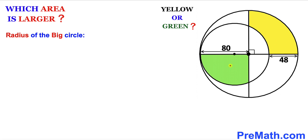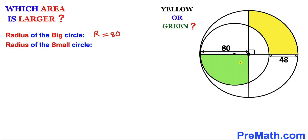Let's calculate the radius of the larger circle. We know that the radius of this large circle is 80 units. Let me label the radius of this big circle as uppercase R, which equals 80. Now, to find the radius of the smaller circle: the radius of the larger circle is 80, so this segment is also 80 units. Since this segment is 48, this remaining segment must be 80 minus 48, which gives us 32 units.